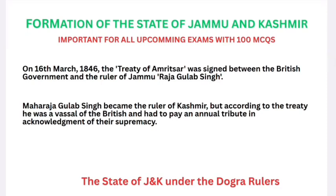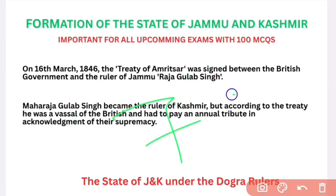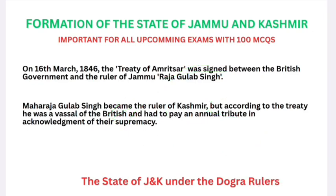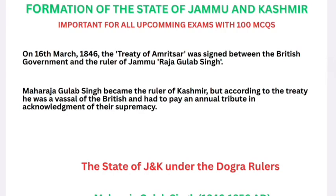On 16th of March 1846, there was the Treaty of Amritsar. The Treaty of Amritsar was signed between the British government — that is, the East India Company — and the ruler of Jammu, Raja Gulab Singh. Note: he was the ruler of Jammu, not Kashmir. According to the treaty, he was a vassal of the British and had to pay an annual tribute in acknowledgement of their supremacy.